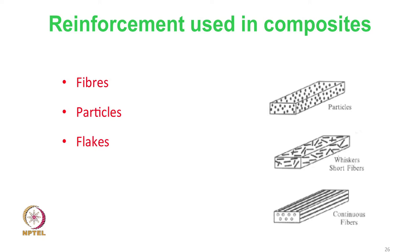If we divide the reinforcement materials as per their shapes, they are divided into three categories. First is fibres, then particles, and the third one is flakes. Fibres are defined by a higher length-to-diameter ratio. Particles are very small in dimension and flakes are a little bit larger in size.